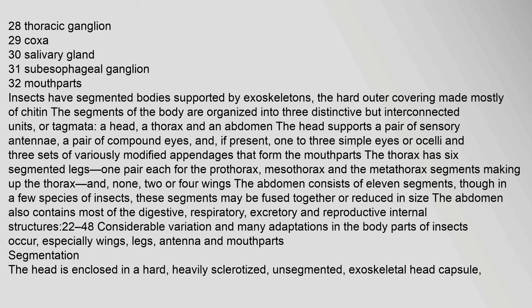The thorax has six segmented legs — one pair each for the prothorax, mesothorax, and metathorax segments — and none, two, or four wings. The abdomen consists of eleven segments, though in a few species these may be fused or reduced in size. The abdomen also contains most of the digestive, respiratory, excretory and reproductive internal structures. Considerable variation and many adaptations in the body parts of insects occur, especially in wings, legs, antennae and mouthparts.